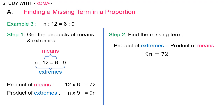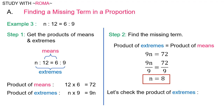Therefore, 9n is equal to 72. Divide both sides by 9: 9n divided by 9 is equal to n, and 72 divided by 9 is equal to 8. Therefore, n is equal to 8. To check, let's get the product of extremes: n times 9 equals 9n, which is equal to 9 times 8, which is equal to 72. Therefore, n is 8.